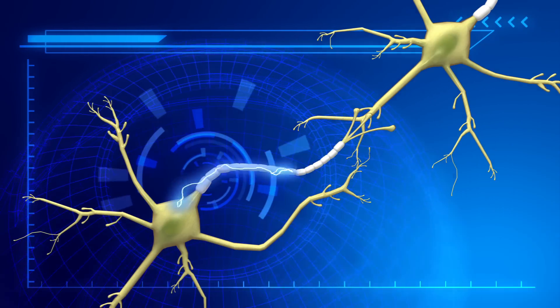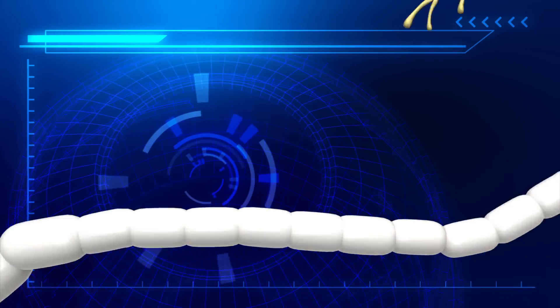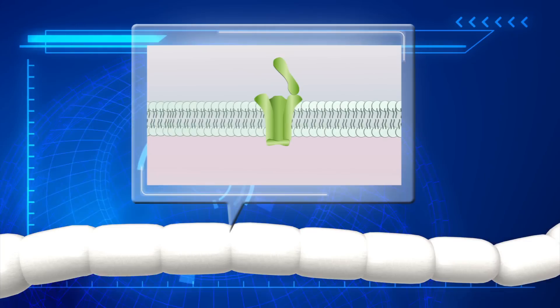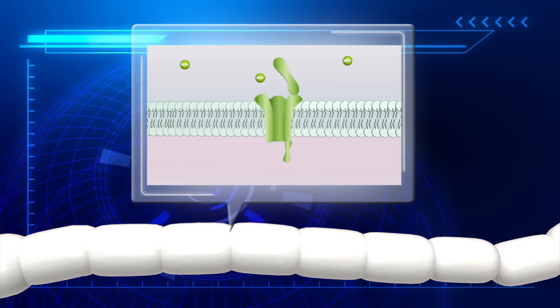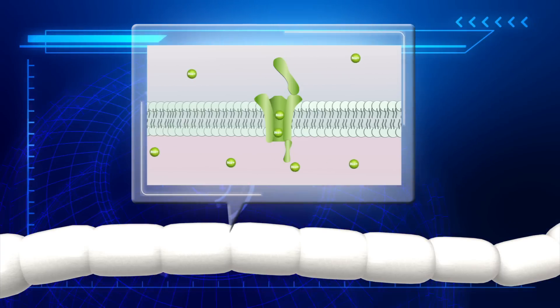Neurons transmit information as electrical and chemical impulses. Within the neuron's axon, there are sodium ion channels, such as the NAV 1.7. Whenever a neuron receives a signal, it activates the channels and sodium ions move into the cell.